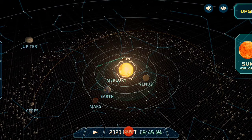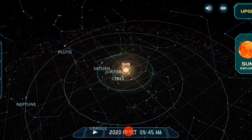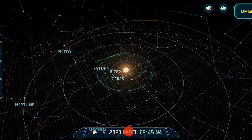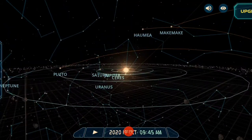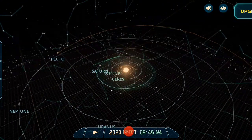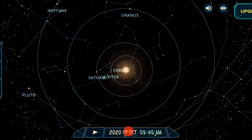Sun, then Mercury, then Venus, then Earth, then Mars, then Jupiter, then Uranus, Neptune. It's another galaxy — the name of the stars — these are the constellations.